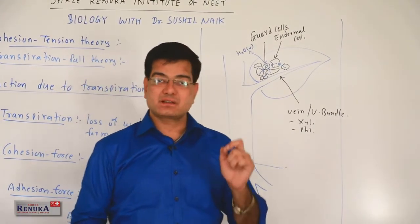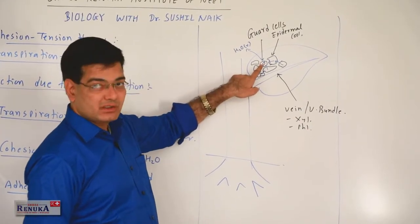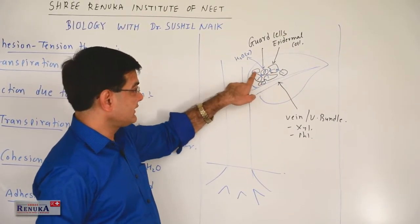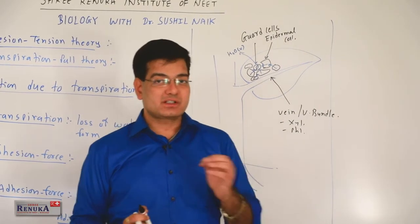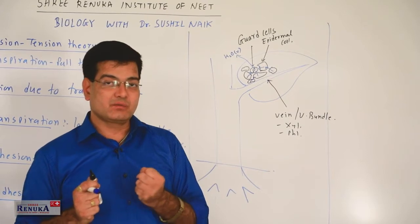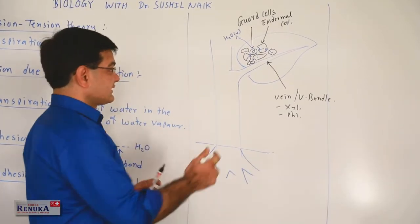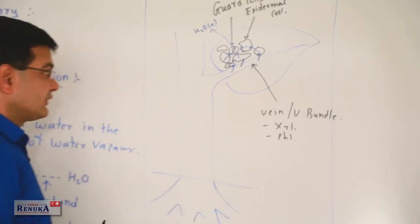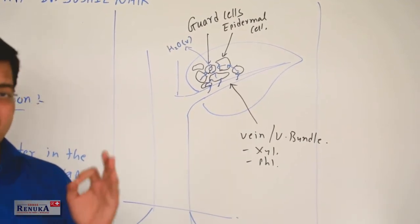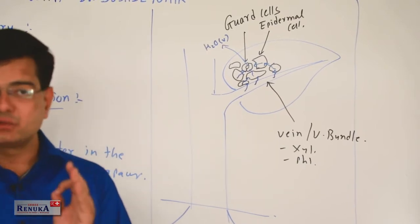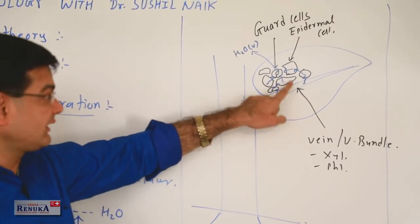Water has high surface tension in liquid form compared to gaseous form. As the guard cell loses water and absorbs it from surrounding epidermal cells, a tension develops between the water molecules and they are pulled toward the guard cell. This creates a decreasing gradient of water potential: first the guard cell reduces its water potential, then the epidermal cells, then the xylem vessels reduce their water potential.